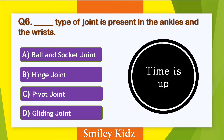Your time is up. The right answer is gliding joint. Gliding joint is a type of joint that is present in the ankles and the wrist.